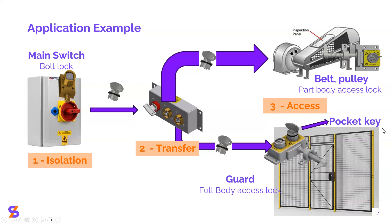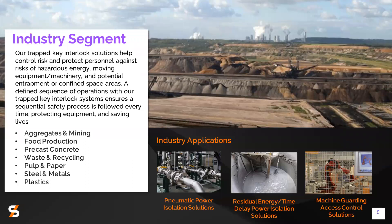Now that we've set the frame for how trap key interlocks work, we can talk about where they apply. The scope is very large. The first category is industry: everything related to aggregates, mining, concrete, food production, metals, paper, and waste recycling — basically all industries where you have machinery like conveyors, belts, mixers, and pulleys.